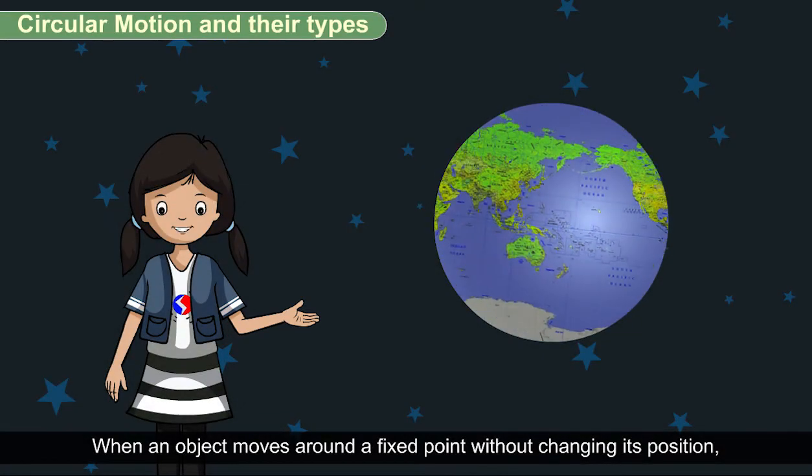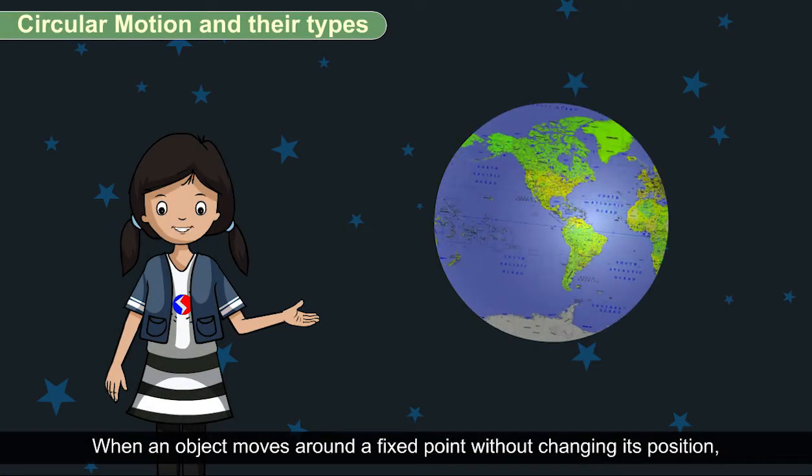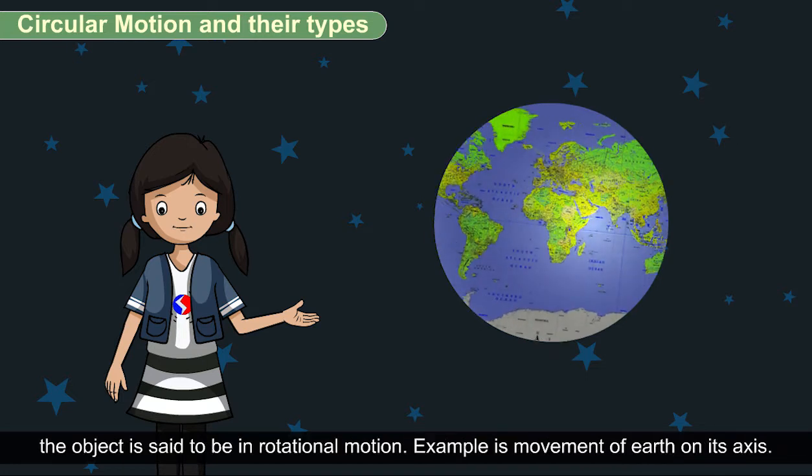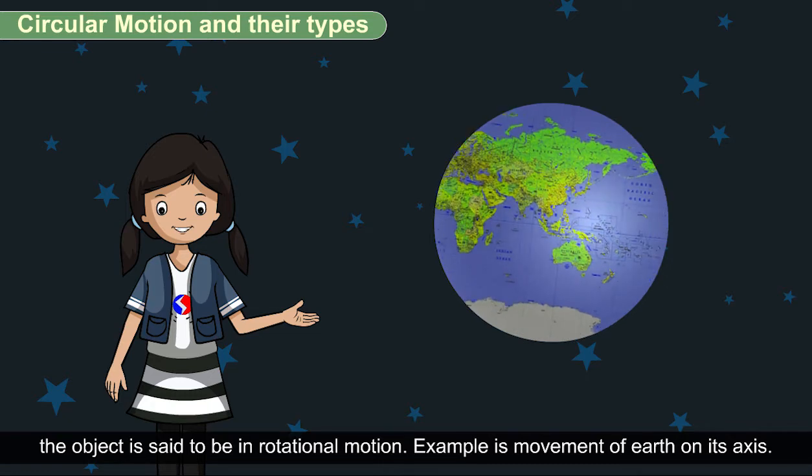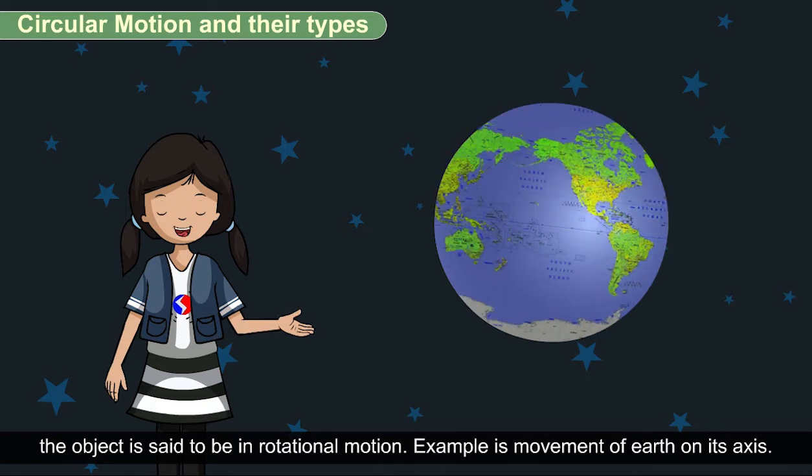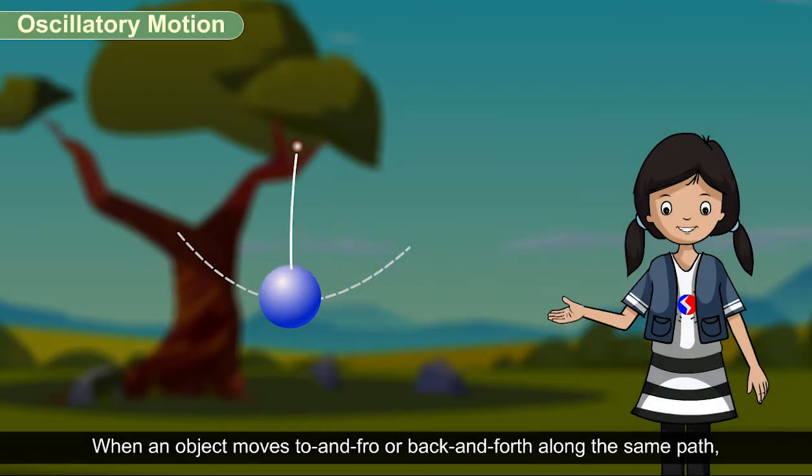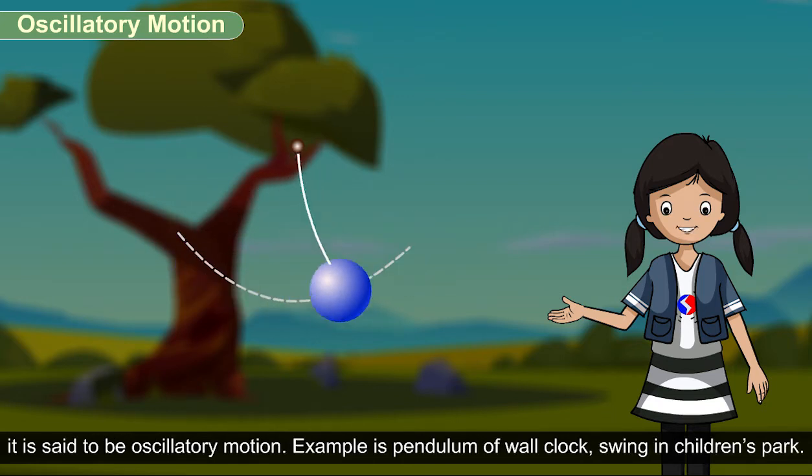When an object moves around a fixed point without changing its position, the object is said to be in rotational motion. Example: movement of earth on its axis. When an object moves to and fro or back and forth along the same path, it is said to be oscillatory motion.